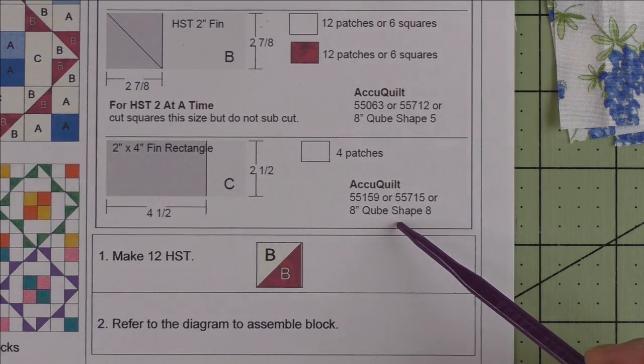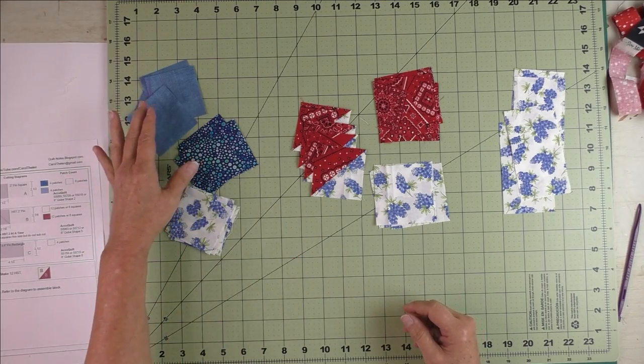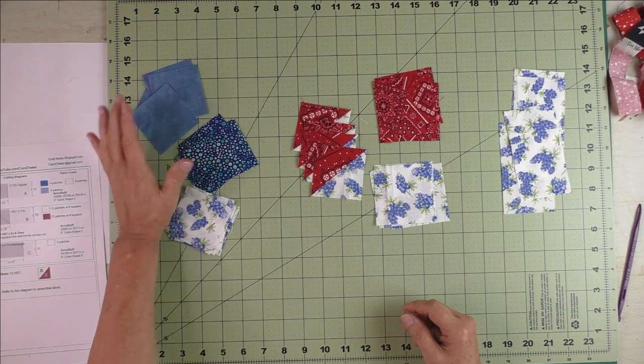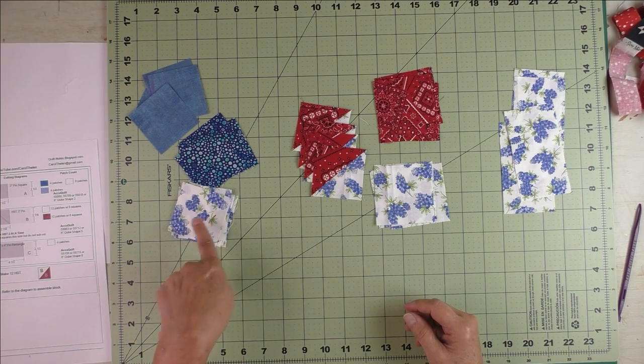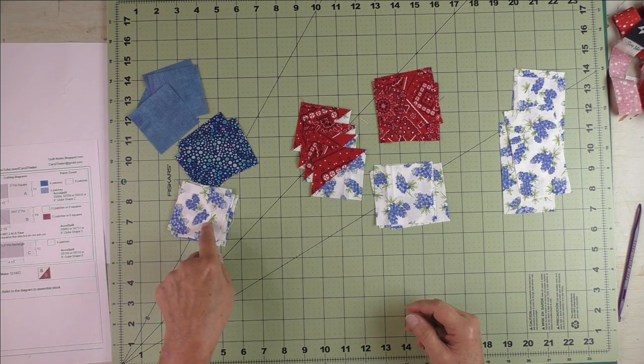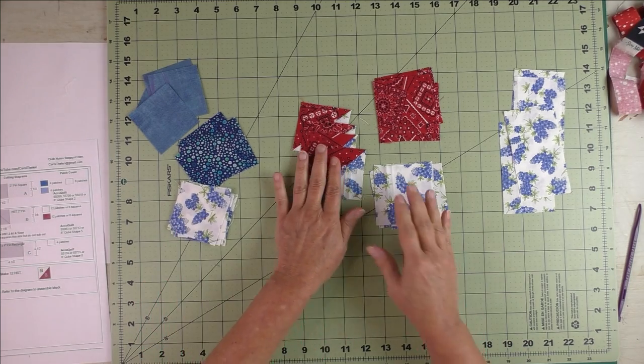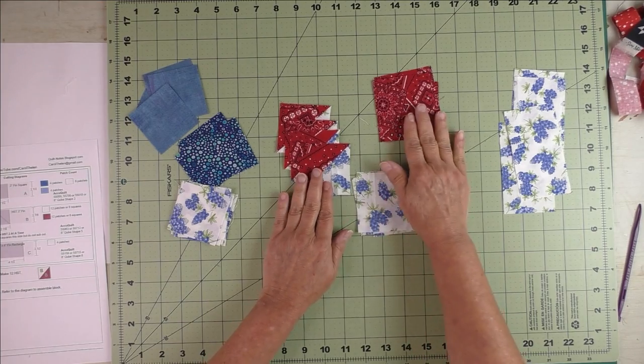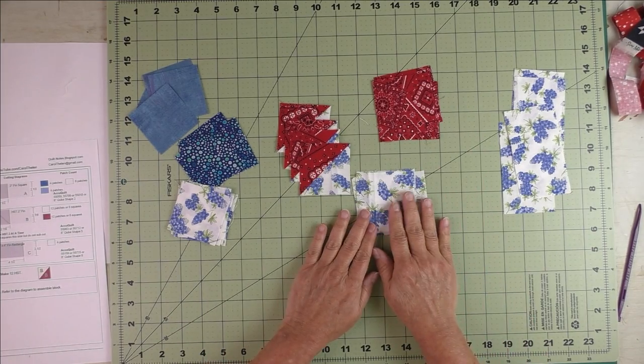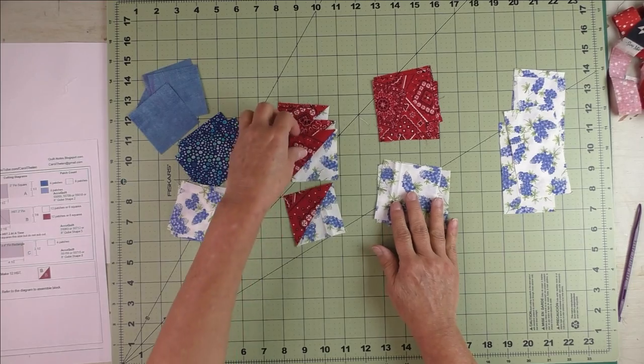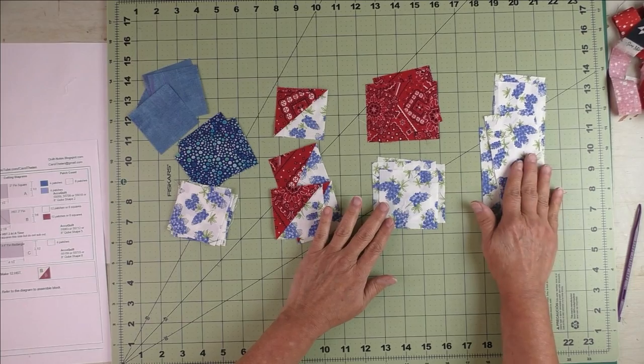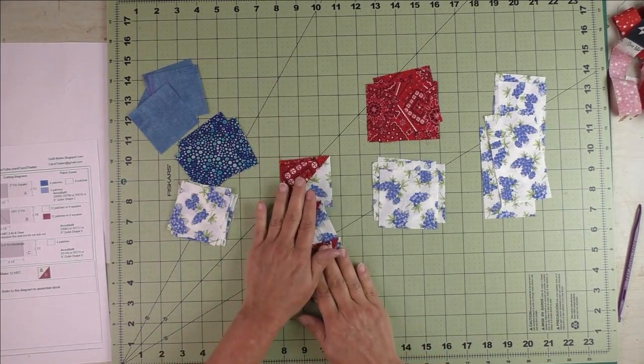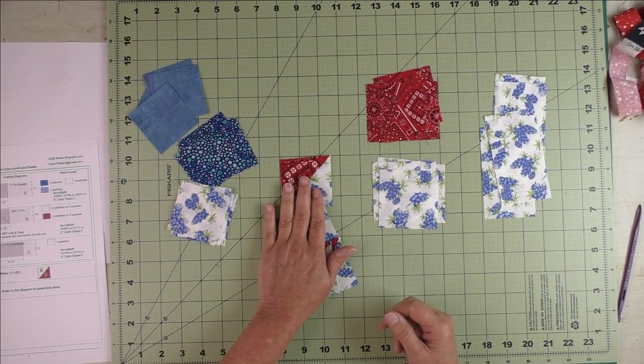Here are the fabrics I've chosen. I have a dark blue and a medium blue, and for my background fabric I've chosen this bluebonnets flowers. They're the state flower of Texas. For the half square triangles I've chosen this red fabric and the background fabric. I've already made four of the half square triangles, and then finally here's the background rectangles.